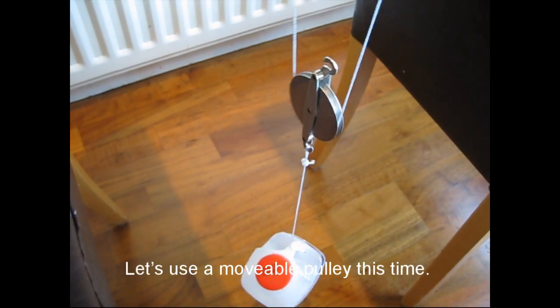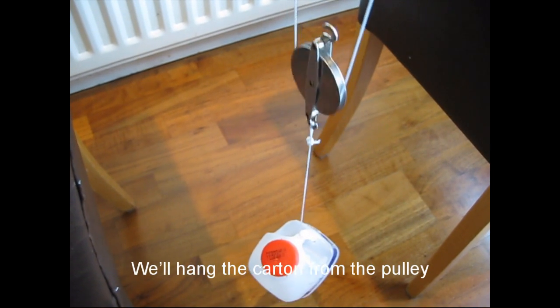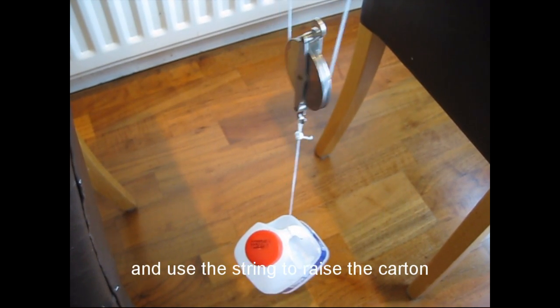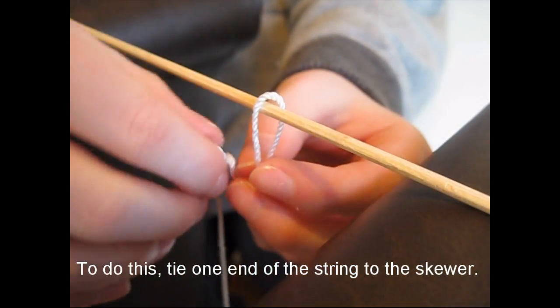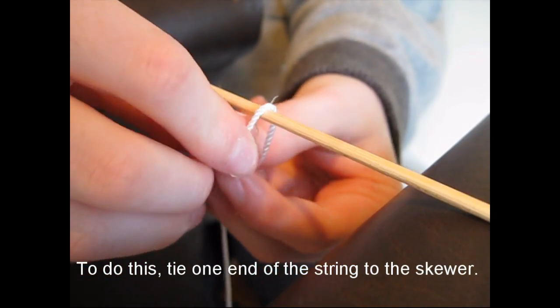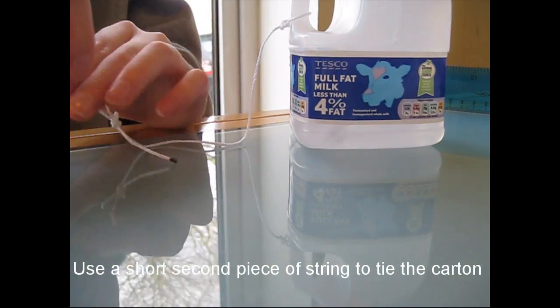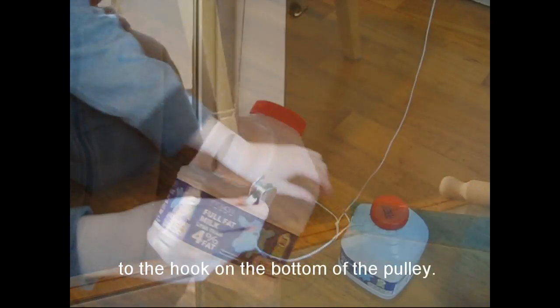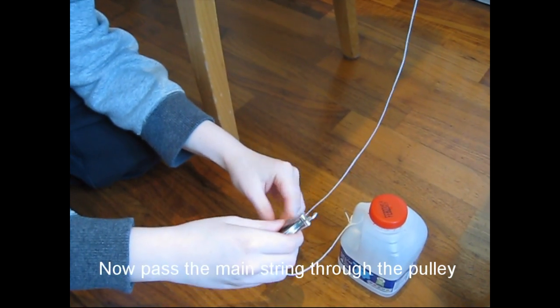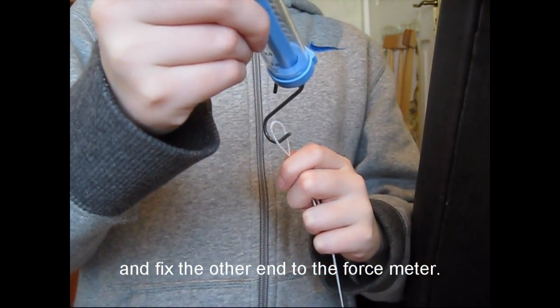Let's use a moveable pulley this time. We'll hang the carton from the pulley and use the string to raise the carton and the pulley up and down. To do this, tie one end of the string to the skewer. Use a short second piece of string to tie the carton to the hook on the bottom of the pulley. Now pass the main string through the pulley and fix the other end to the force meter.